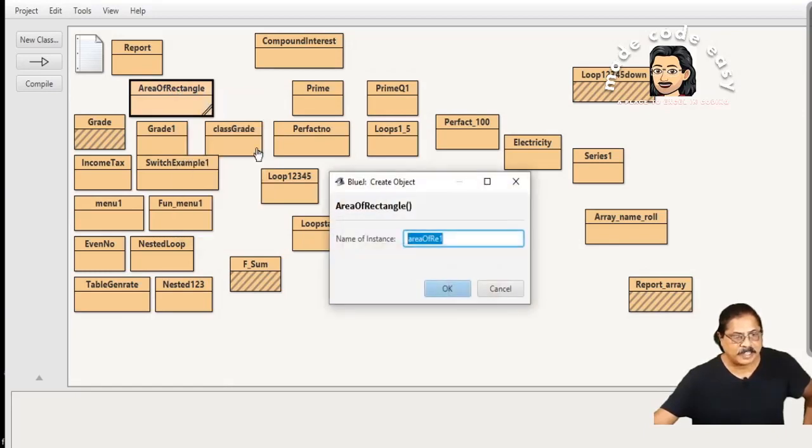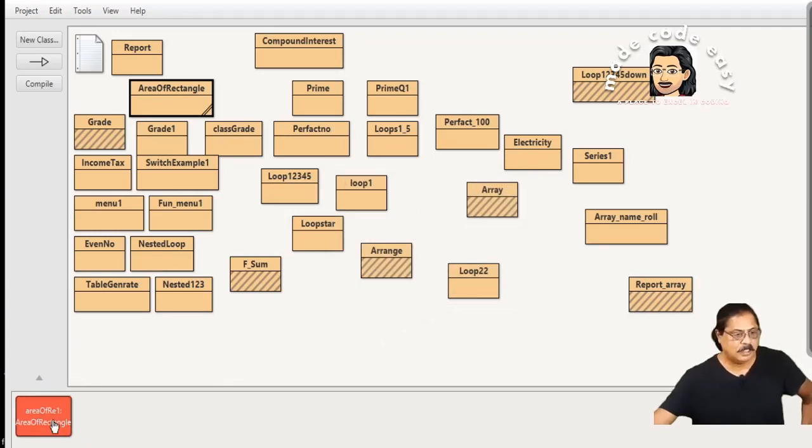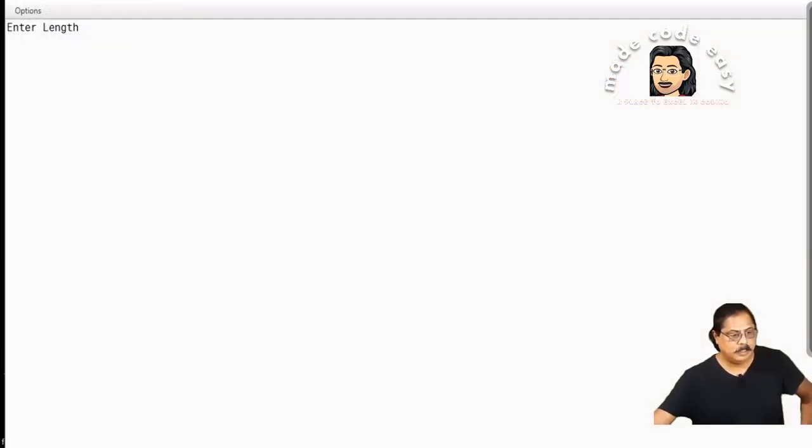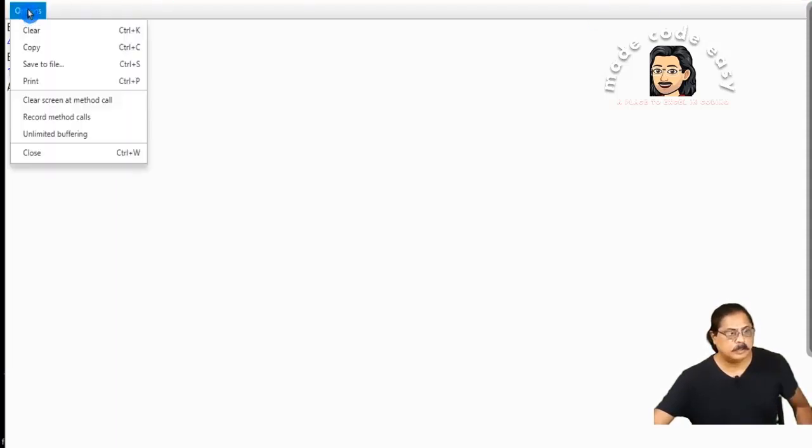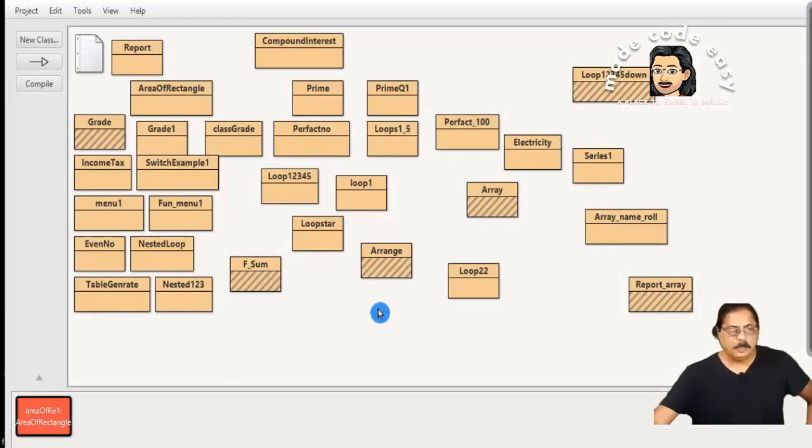Then we click right click, create new AreaOfRectangle. This is the name, and you click on void main. Computer asking length, I give 45. Breadth I am giving 15. See, this is the output has come. You have understood how to calculate area of rectangle, how to do practical. We'll see you in next class. Thank you.